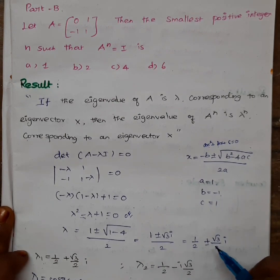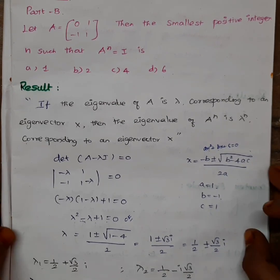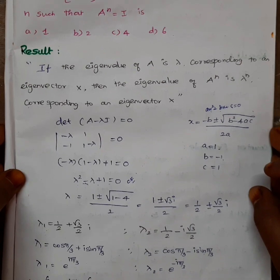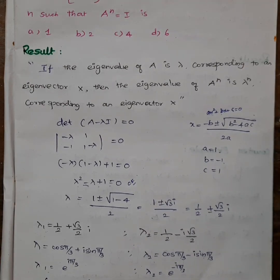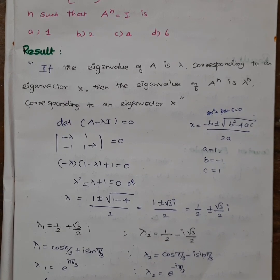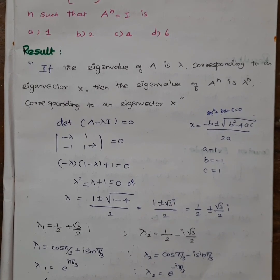Applying the quadratic formula gives two roots: 1/2 plus i·(√3)/2, and 1/2 minus i·(√3)/2. The plus becomes minus for the second root.